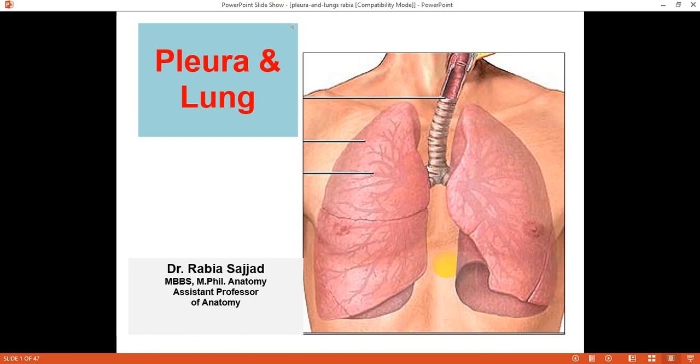It's a very important topic of thorax and I'm going to divide it into three sections. Today I'm going to discuss the anatomy of pleura and the external features of lung.